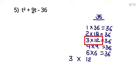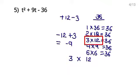Since 36 is negative, the signs of the factors will be opposite. We are subtracting to get 9 which is positive, so the greater value gets the plus sign. If we do minus 12 plus 3, we subtract and get minus 9, not plus 9. So the greater value 12 should be plus and the smaller value 3 should be minus. Remember: if we have a plus sign in the middle term, the greater value will be plus when subtracting. If the middle term has a minus sign, the greater value will be minus.